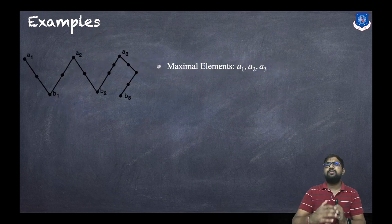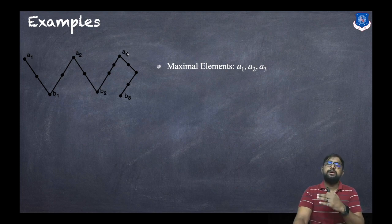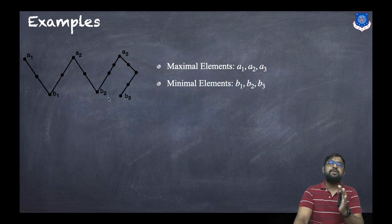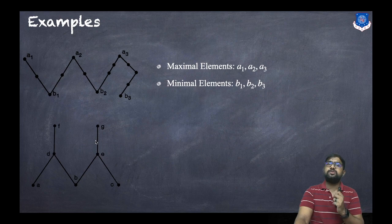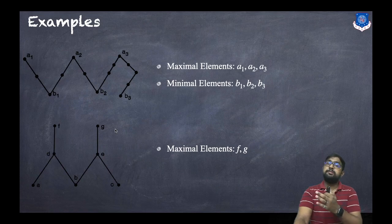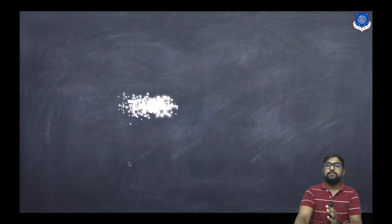Consider this image: the maximal elements are those at the top. As you can see, a1, a2, and a3 are on top, so they are the maximal elements. The elements at the bottom, b1, b2, and b3, are the minimal elements. For the Hasse diagram shown, f and g are the maximal elements since they are at the top, while a, b, and c at the lower parts are the minimal elements.